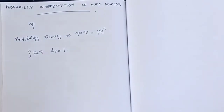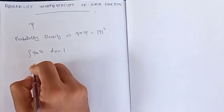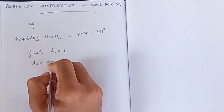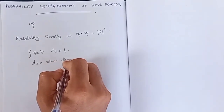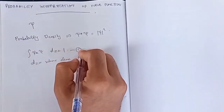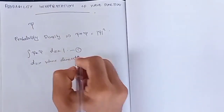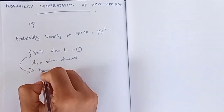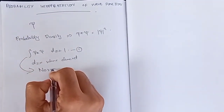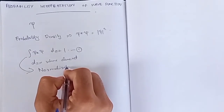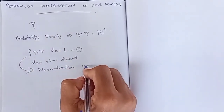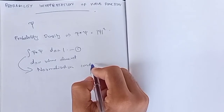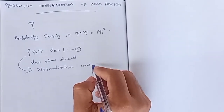Let's try it. If dz is the volume element, we have the integral of ψ* ψ dz equal to 1. This is Equation 1. That's why we call it the normalization condition.